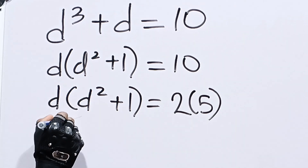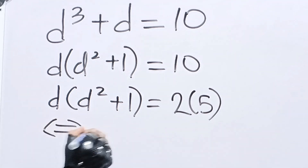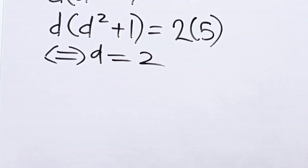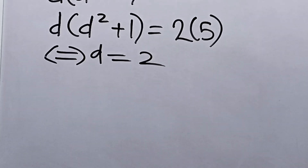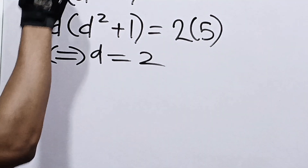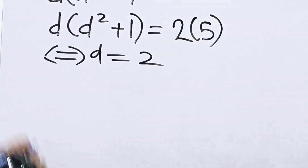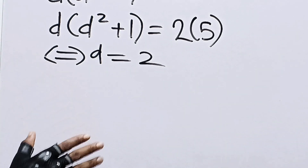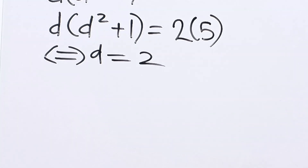We can conclude that d is equal to 2. Now, d equals 2 is the first answer. Since the highest power of d is 3, there are two more answers remaining. This is the only real answer we're going to get for this equation, but let's go ahead and find the complex answers.